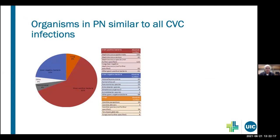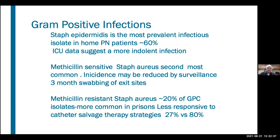Like all central venous catheter infections in parenteral nutrition, the majority of these are gram-positive infections, followed by gram-negative infections, and then fungi. Polymicrobial infections sometimes suggest a central source. In gram-positive infections, Staph epidermidis is the most prevalent — it's commonly isolated on the skin and is the most common organism isolated in home parenteral nutrition patients, probably accounting for about 60% of infections.